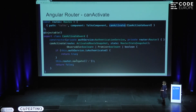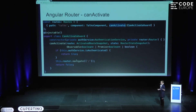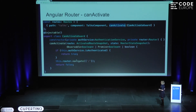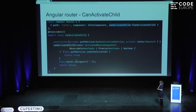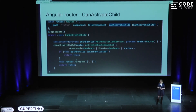There's also the canActivate guard, which is the most common way of implementing permissions. This will load your code but won't allow you to navigate to a certain component or page. You have the injectable class and implement the canActivate method — the code is exactly the same as canLoad. Our third important guard is canActivateChild, which does exactly the same thing as canActivate, just that it refers to child components.